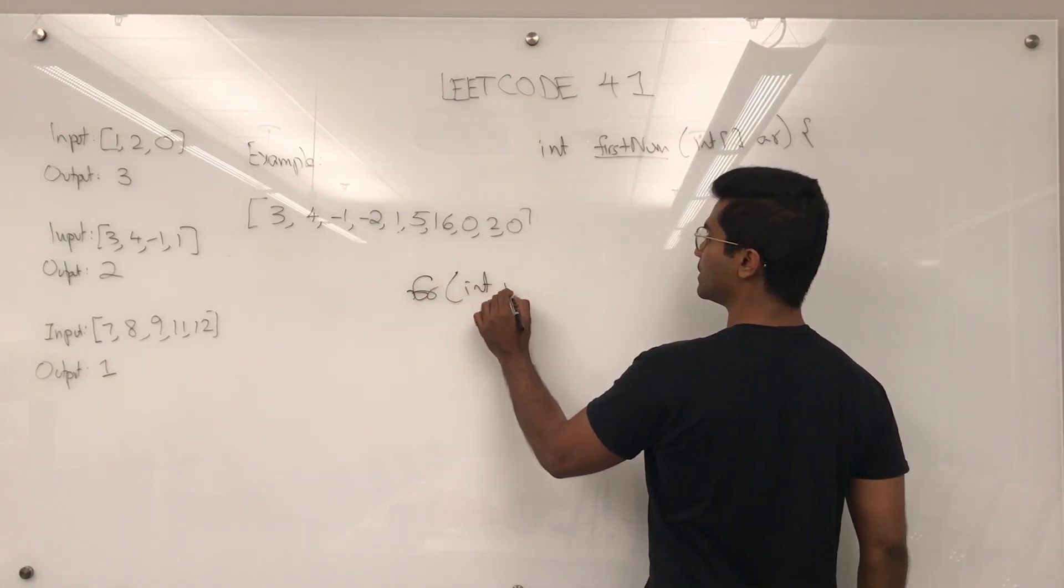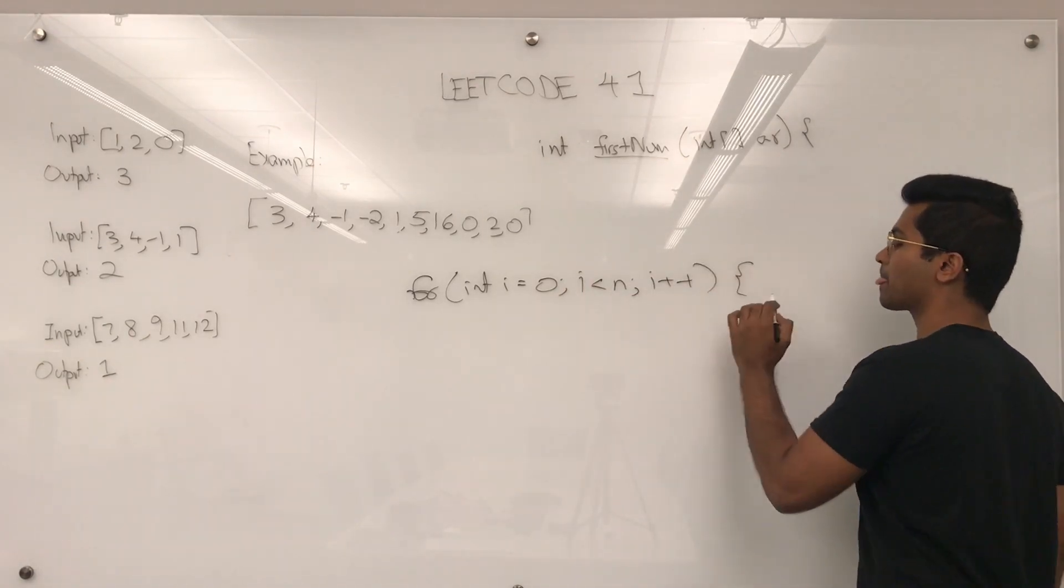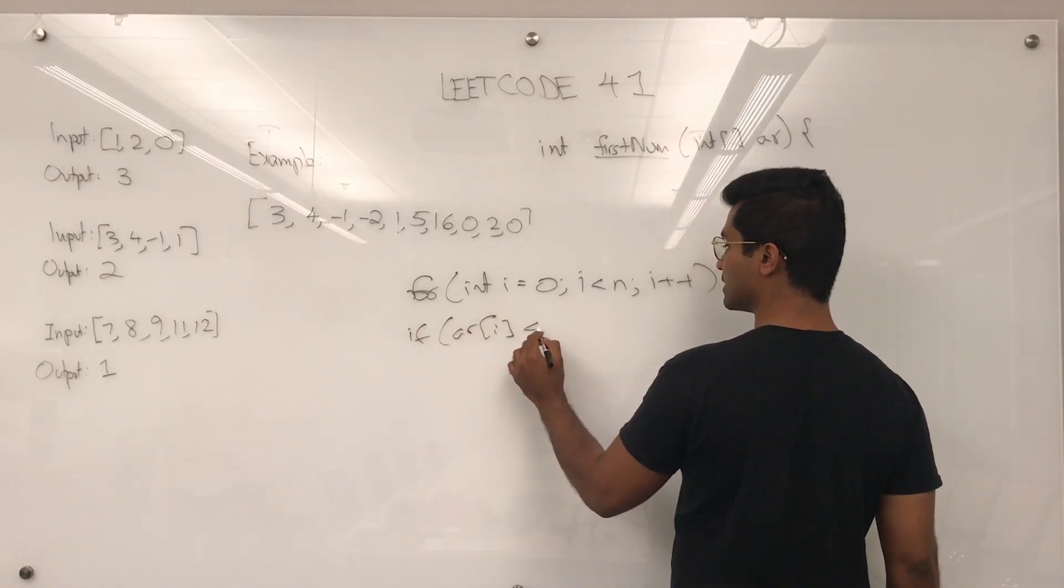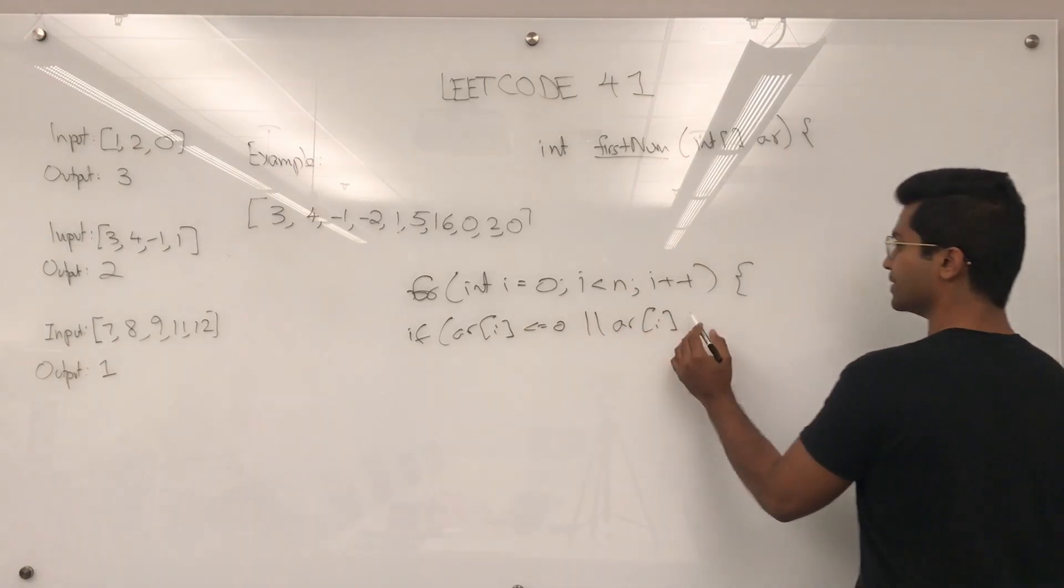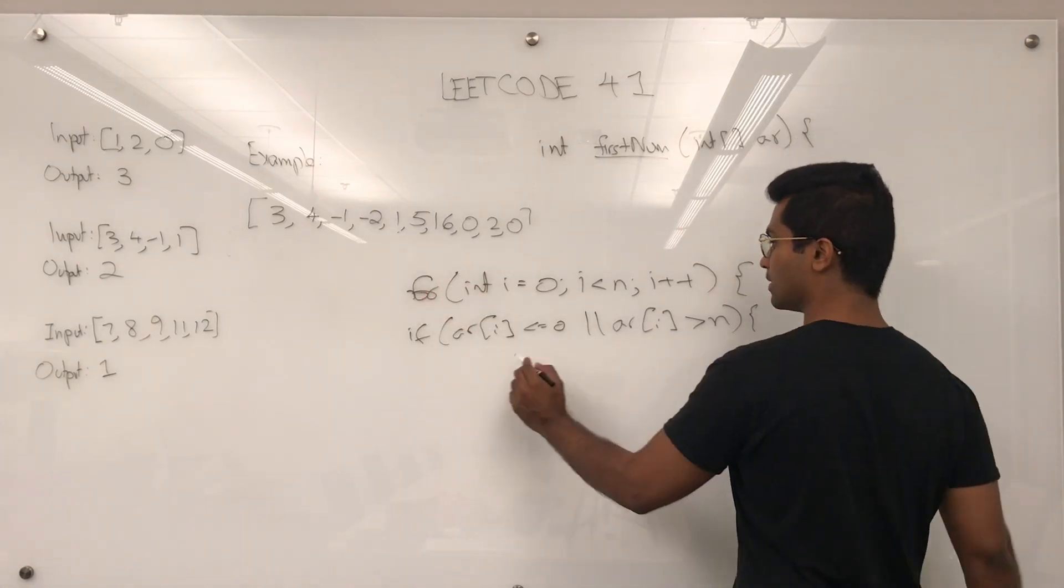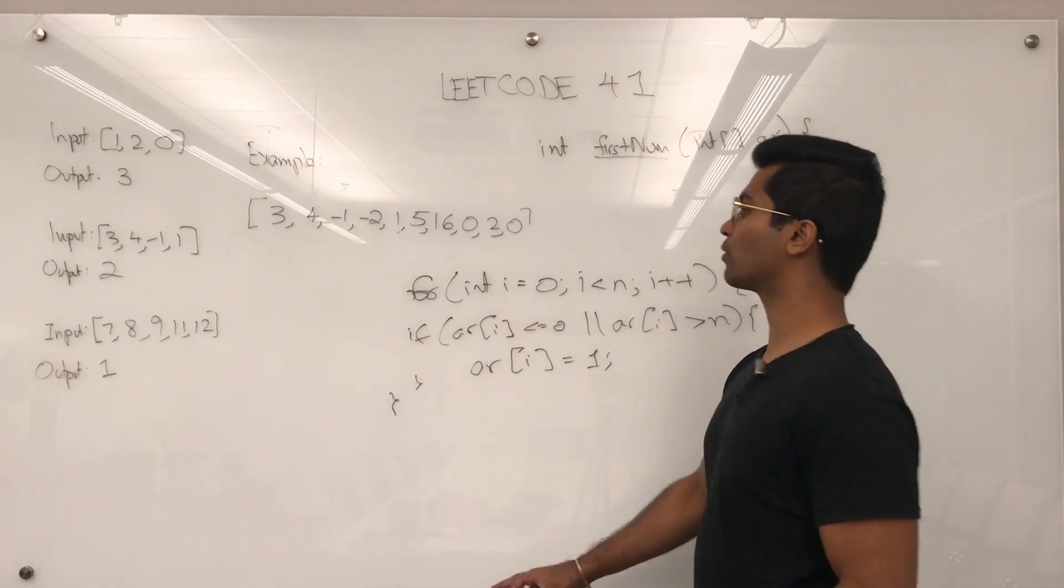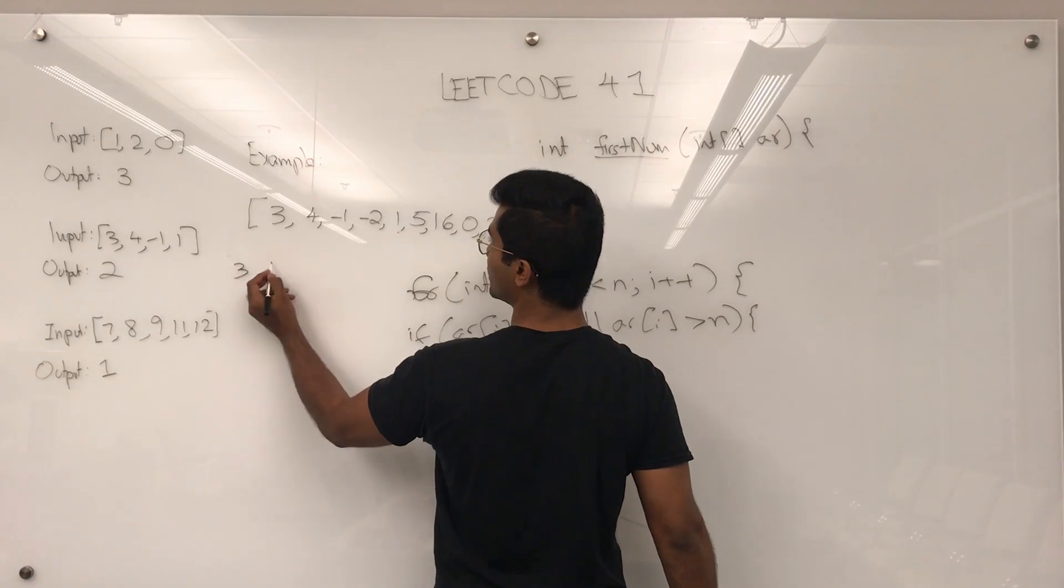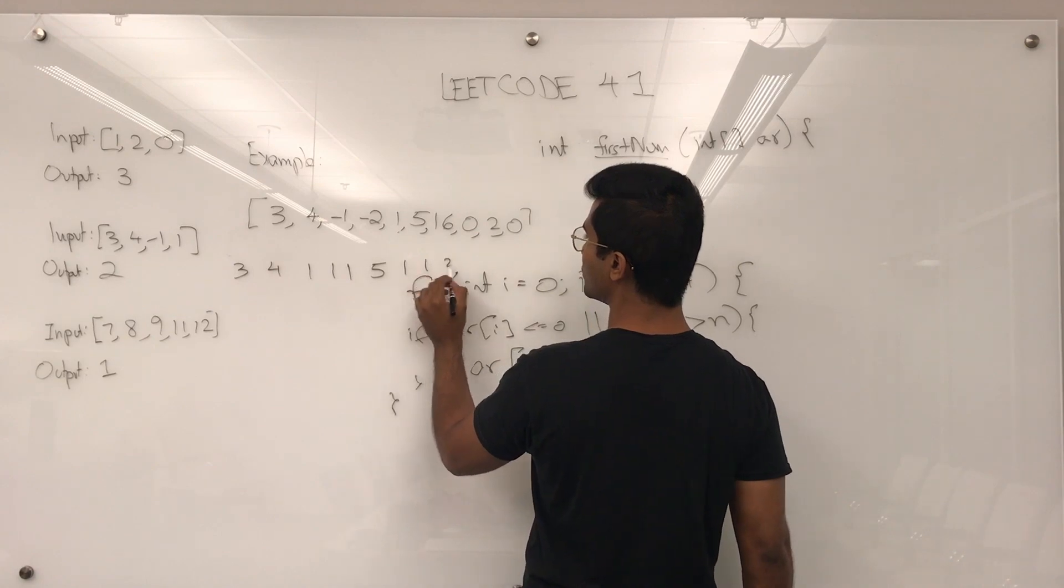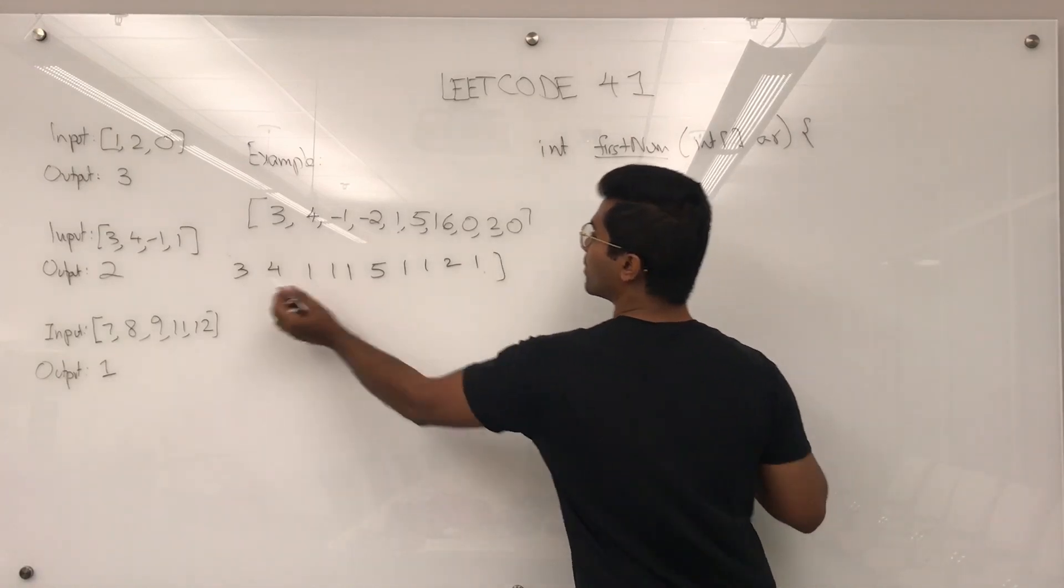Next we're going to filter everything. For int i equals 0, i is less than n, i++. If array[i] is less than or equal to 0, or array[i] is greater than n, then we set that equal to 1, which is our way of saying let's filter this. Now that we're done with that for loop, what this is going to look like is 3, 4, 1, 1, 1, 5, 1, 1, 2, 1. That's going to be our array.